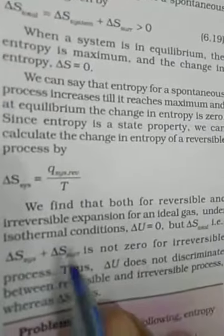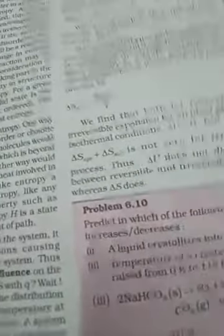We find both reversible and irreversible cases. Reversible means coming back; irreversible means only reactant turns into product. For both reversible and irreversible expansion for an ideal gas under isothermal condition, delta U is equal to 0. But delta S total — that is system and surrounding — is not 0 for irreversible; it is greater than 0. Thus delta U does not discriminate between reversible and irreversible processes, whereas delta S does. This was informal knowledge about entropy.